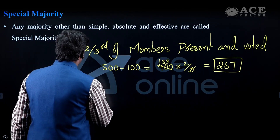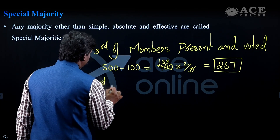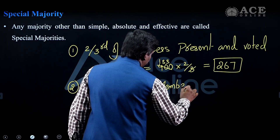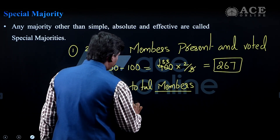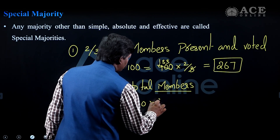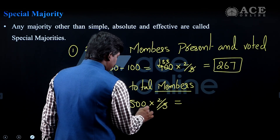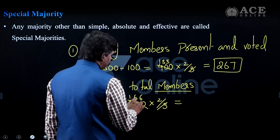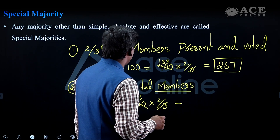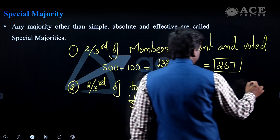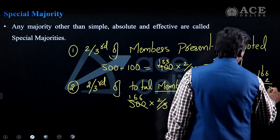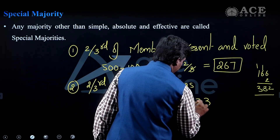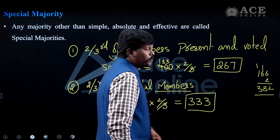For special majority type two — two-thirds of total members — the total strength is 500. So 500 into two-thirds equals approximately 334 members. This is the second definition of special majority based on total strength of the house.